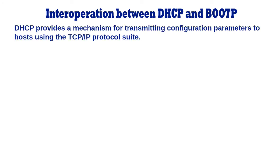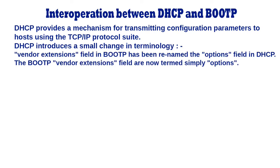The Dynamic Host Configuration Protocol provides a mechanism for transmitting configuration parameters to hosts using the TCP/IP protocol suite. The format of DHCP messages is based on the format of BootP messages, so that in certain circumstances DHCP and BootP participants may exchange messages. DHCP introduces a small change in terminology intended to clarify the meaning of one of the fields.